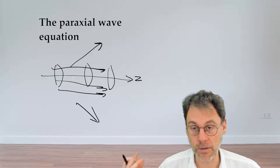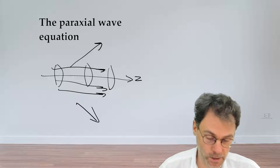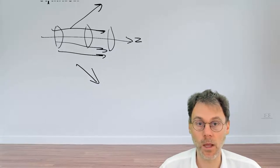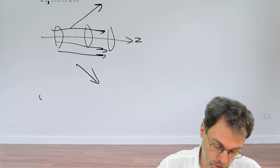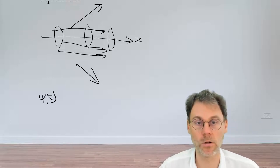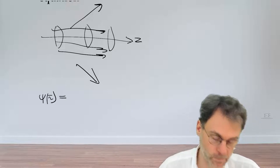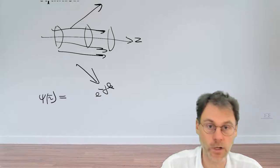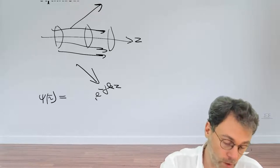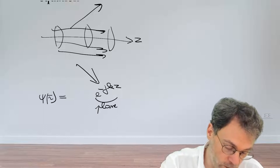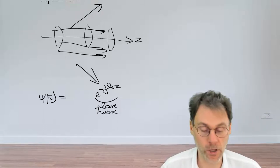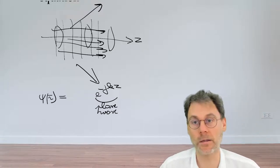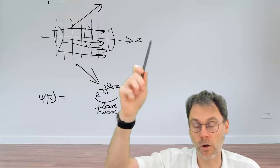In order to identify what the Helmholtz equation looks like in this approximation, we're going to use the so-called slowly varying envelope approach. We're going to say that our scalar field basically consists of two factors. On the one hand, we have this exponential minus j·k·z, which is a plane wave along the z direction. That basically expresses the fact that light is, in essence, propagating along the z direction, along our optical axis.